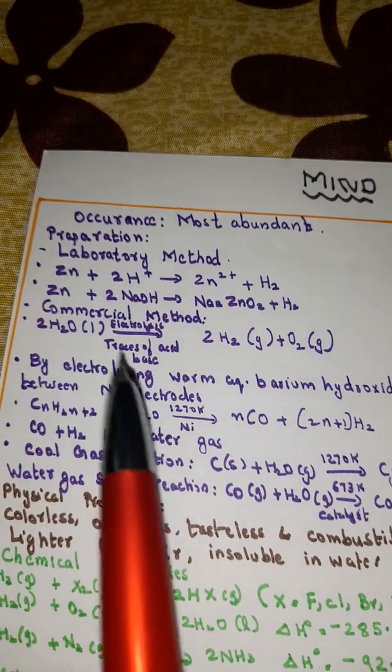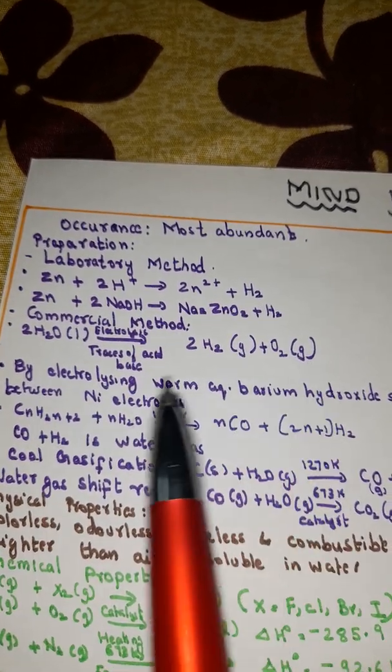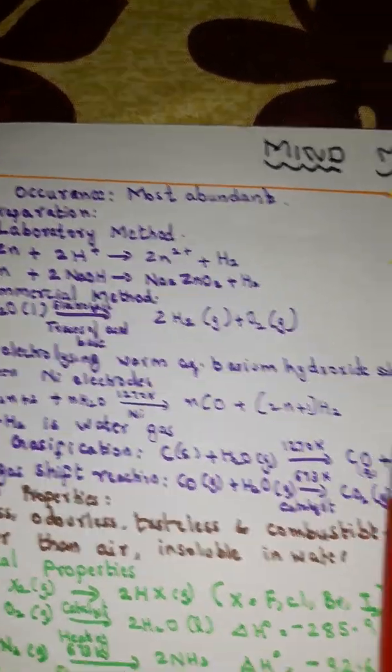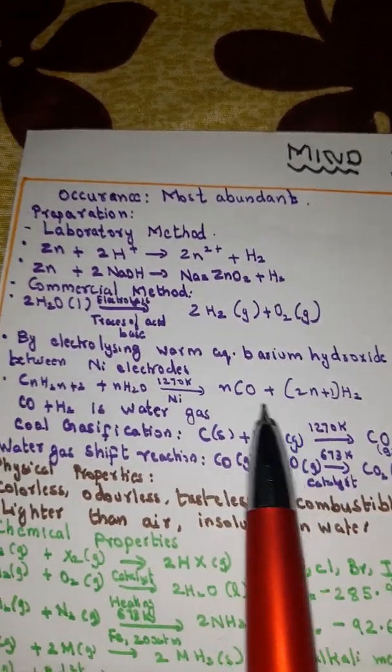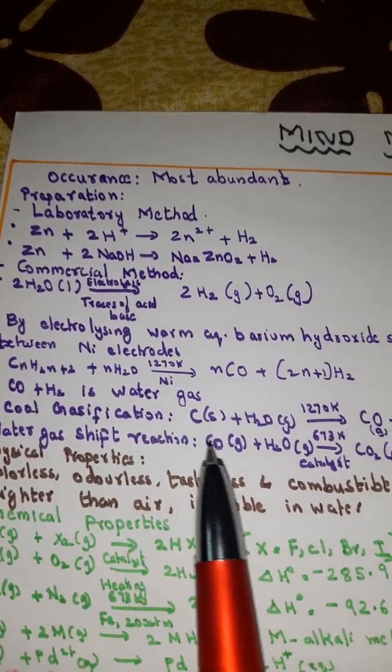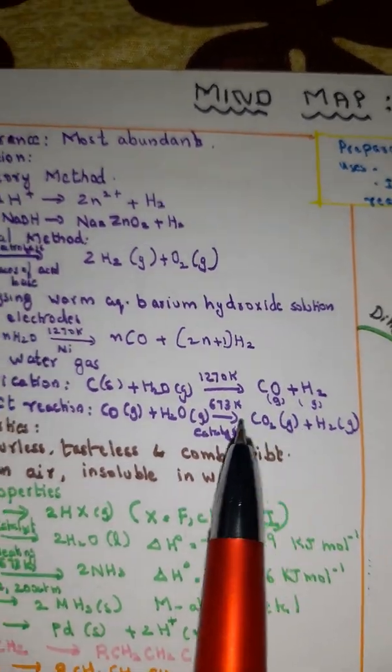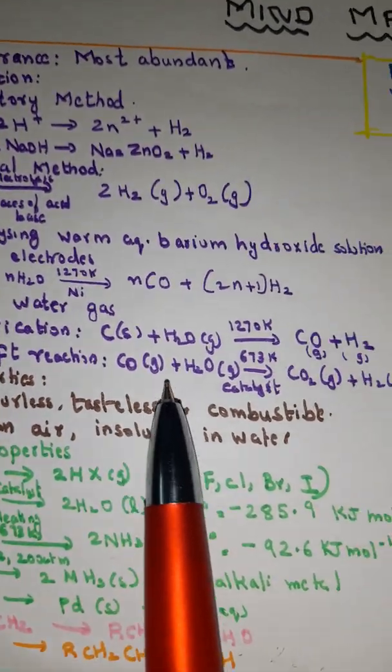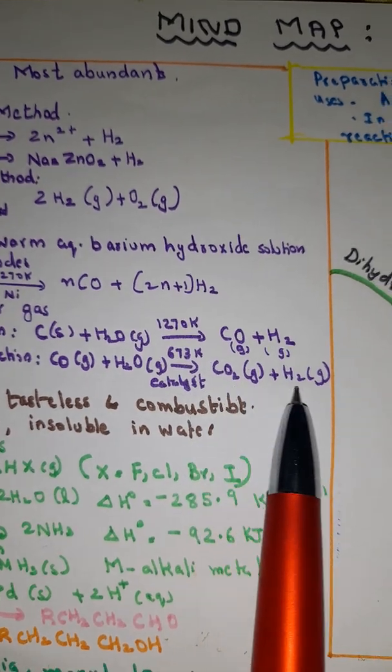Commercial method: electrolysis. By electrolysis we get from water hydrogen and oxygen. Also by electrolyzing warm aqueous barium hydroxide solution between nickel electrodes. CO + H2 is water gas. Coal gasification: C + H2O under 1270 Kelvin gives CO + H2. Water gas shift reaction: CO + H2O at 673 Kelvin with catalyst gives CO2 + H2.